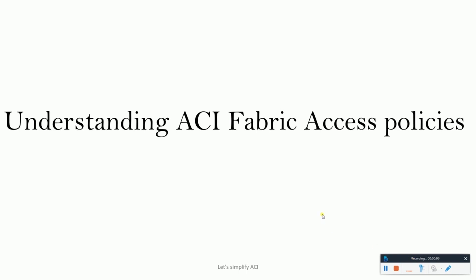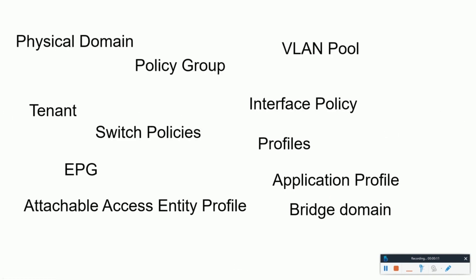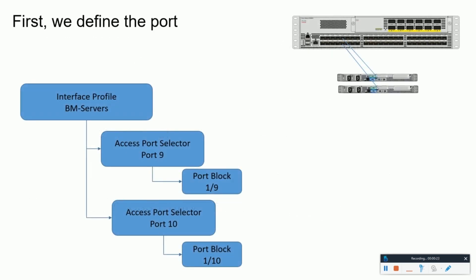Let's understand how all of these access policies work together. They are all scattered right now, so we'll try to align them all and make things work in the ACI fabric. First, we define the ports. For example, port number 9 and 10 of our switch have the same configuration, so we can map a single interface profile for both access ports and map both with the same interface policy group, shown in the gray boxes.